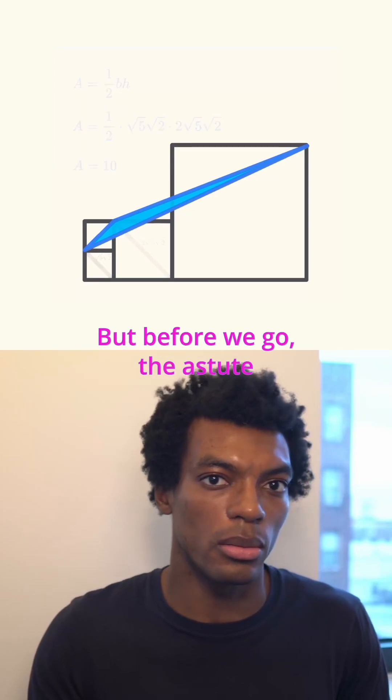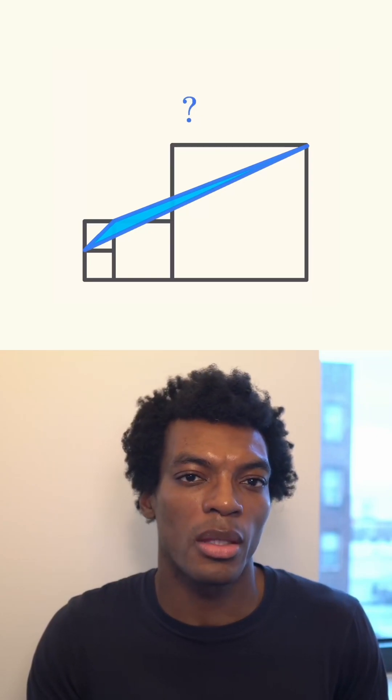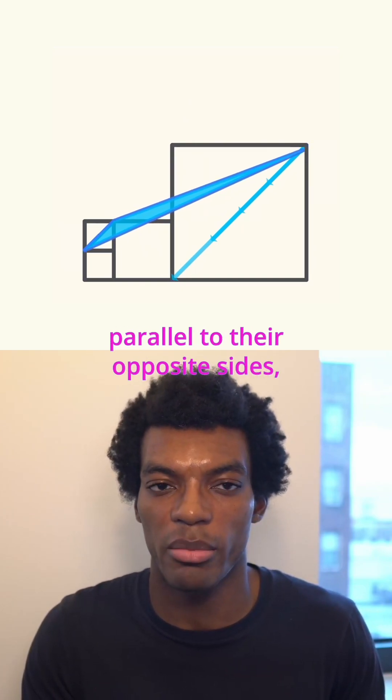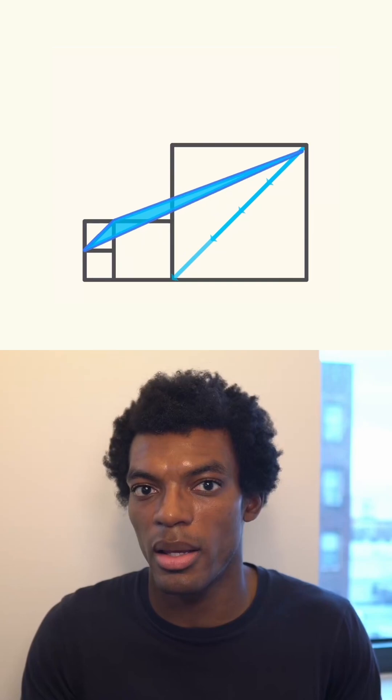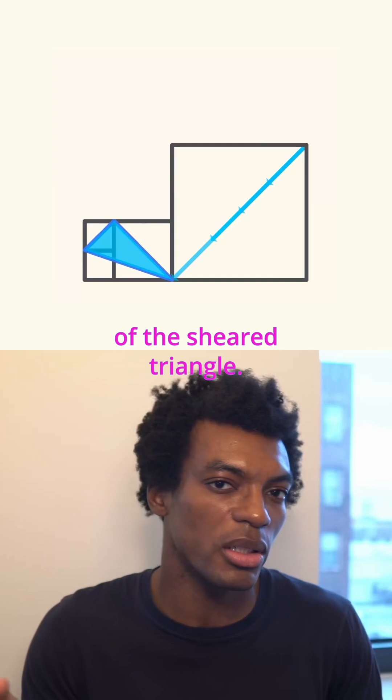But before we go, the astute mathematicians among you may have noticed an even easier way to solve this problem. Because when you shear a triangle by sliding its points along a line parallel to their opposite sides, the area of the original triangle remains the same as that of the sheared triangle.